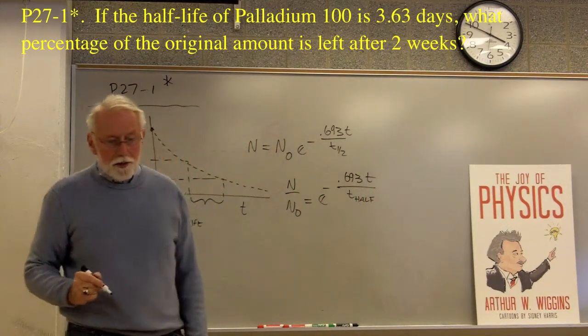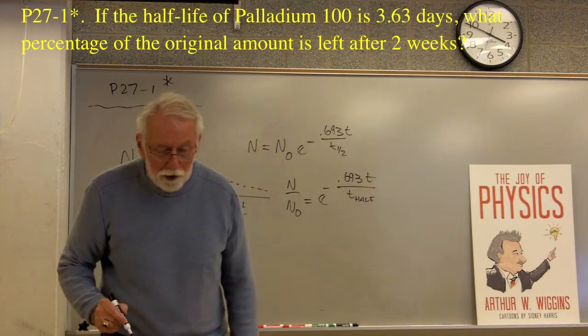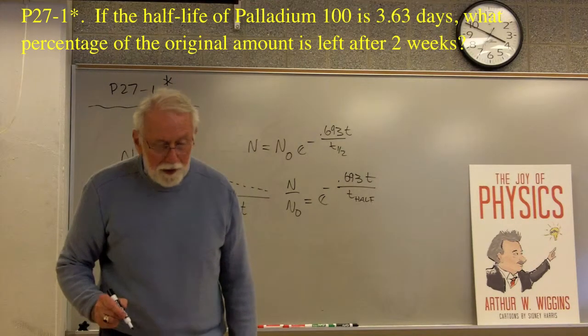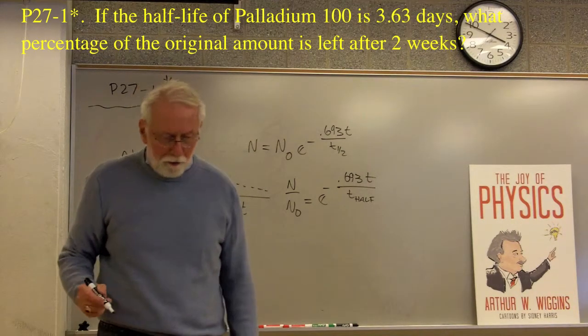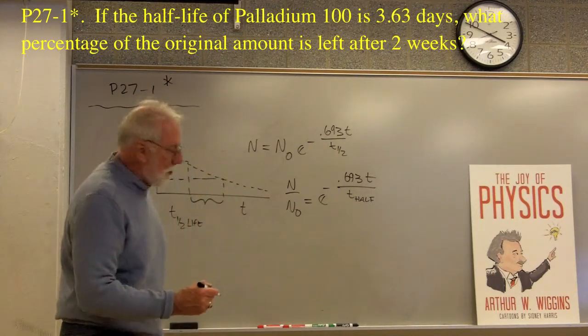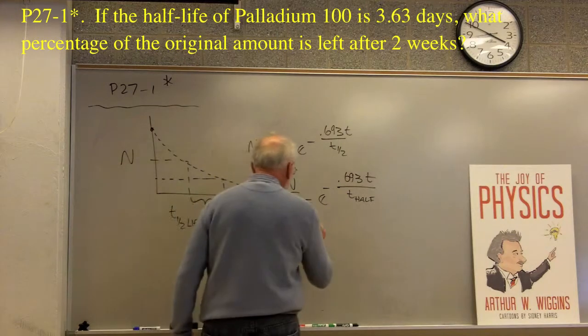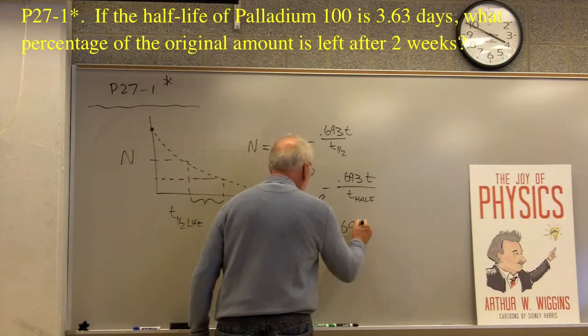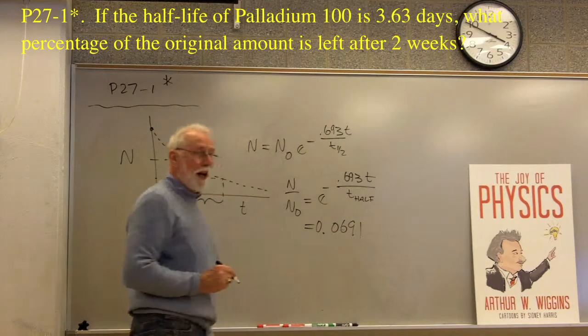So now, it's calculator exercise time. We put in the time, which is two weeks. I suppose since we have it in days, we'll probably turn that into days and say 14 divided by 3.63. This turns out to be 0.0691 as a fraction.